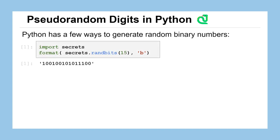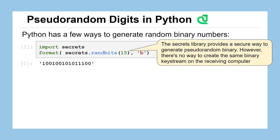Python's secrets library offers one approach: import secrets, then call secrets.randbits() with the number of bits you want. It gives you a decimal which we format as binary, and it does produce securely random bits — this is the standard used in industry for website security. However, because it's designed for truly unpredictable data, there's no way to set it up to produce the same stream twice, which means we can't use it for decryption.